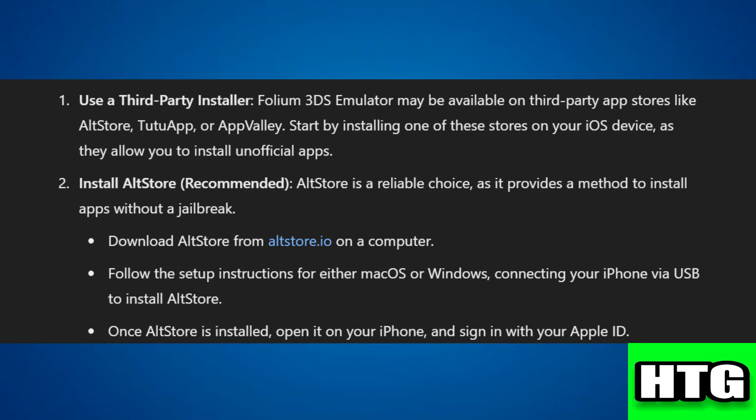Step one: use a third party installer. The Folium 3DS emulator may be available on third party app stores like Altstore, TutuApp, or AppBully. Start by installing one of these stores on your iOS device.